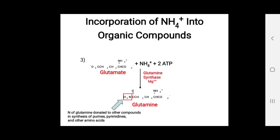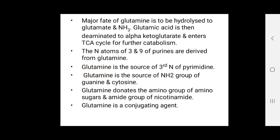This ammonia reacts with hydrogen ions to buffer acids excreted in the urine. Glutamine synthetase forms glutamine from glutamate; the major fate of glutamine is to be hydrolyzed to glutamate and ammonia. Nitrogen atoms at positions three and nine of the purines are derived from glutamine. Glutamine is also the source of the third nitrogen of the pyrimidines.